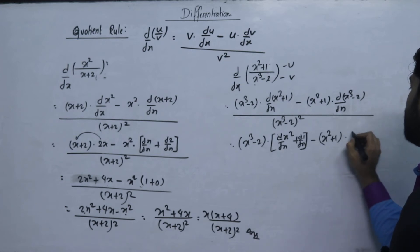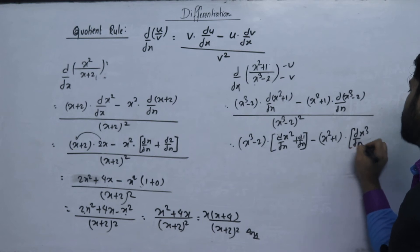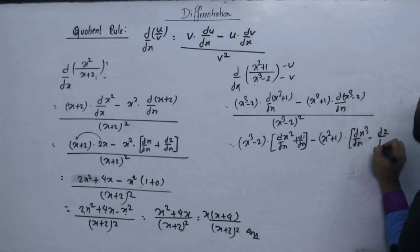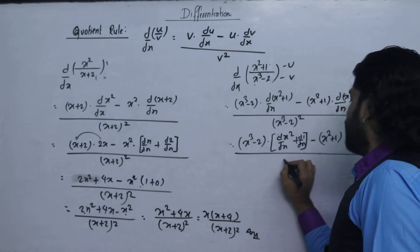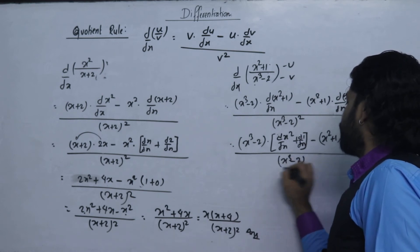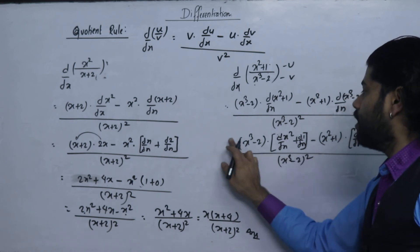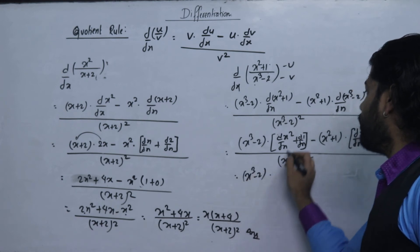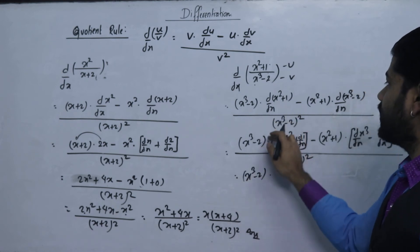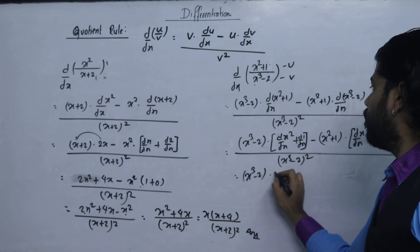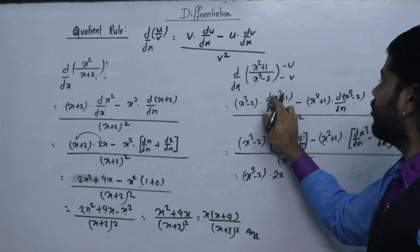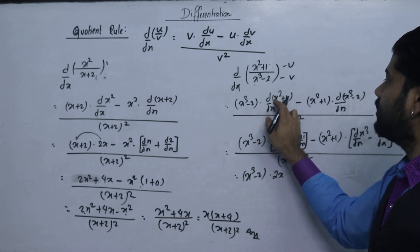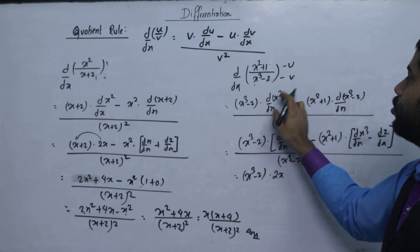We apply the quotient rule: the differences of x cubed with respect to dx minus the differences of 2 with respect to dx, all upon (x cubed minus 2) squared. Now for x cubed minus 2, we take the derivative: the derivative of x to the power 2 gives 2x to the power 2 minus 1.